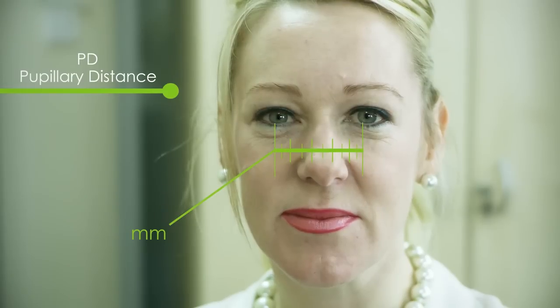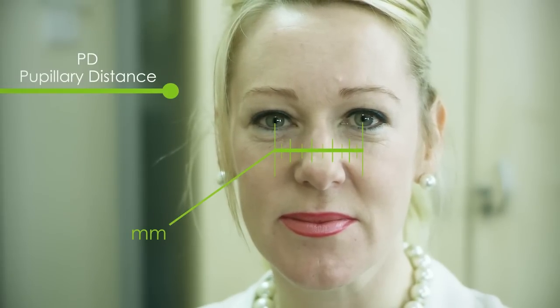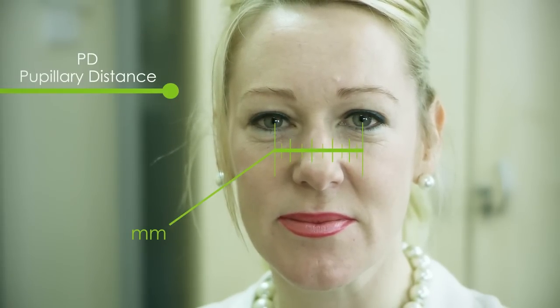The PD or Pupillary Distance is the distance between your pupils measured in millimeters. This measurement ensures your prescription lenses are correctly centered in front of your eyes when purchasing new glasses.